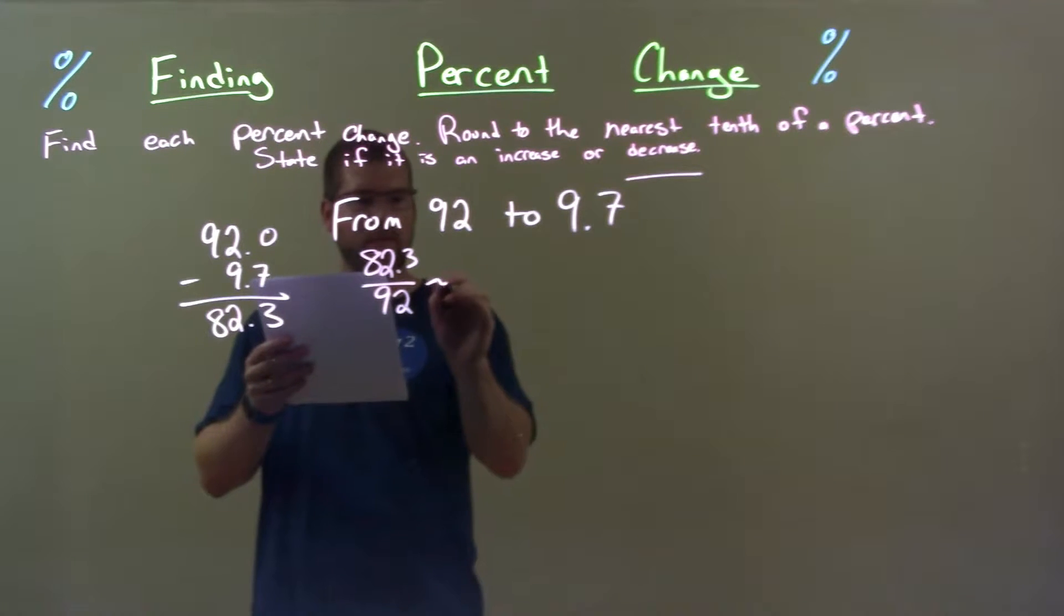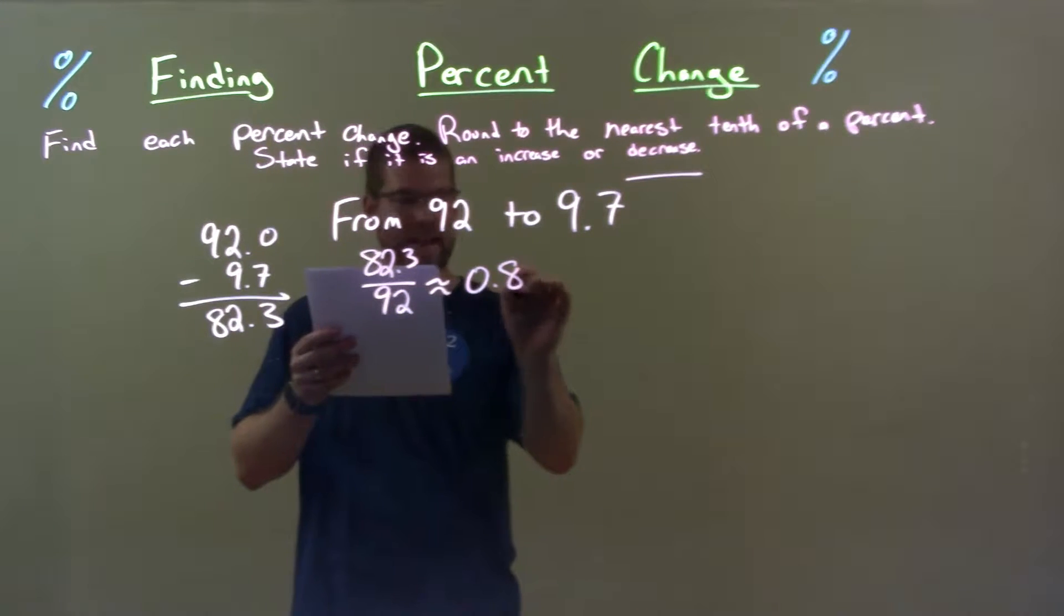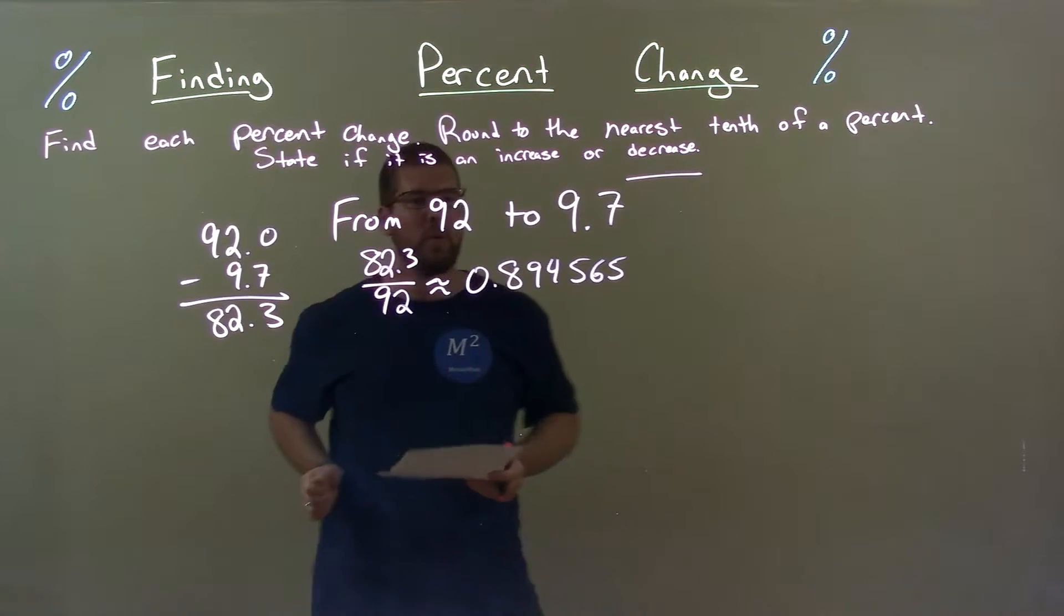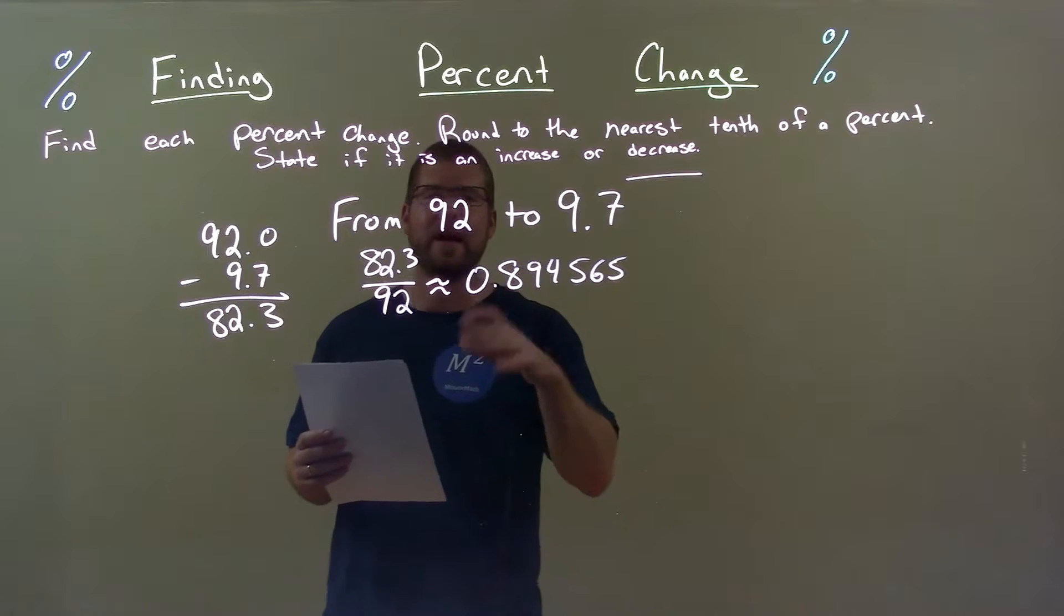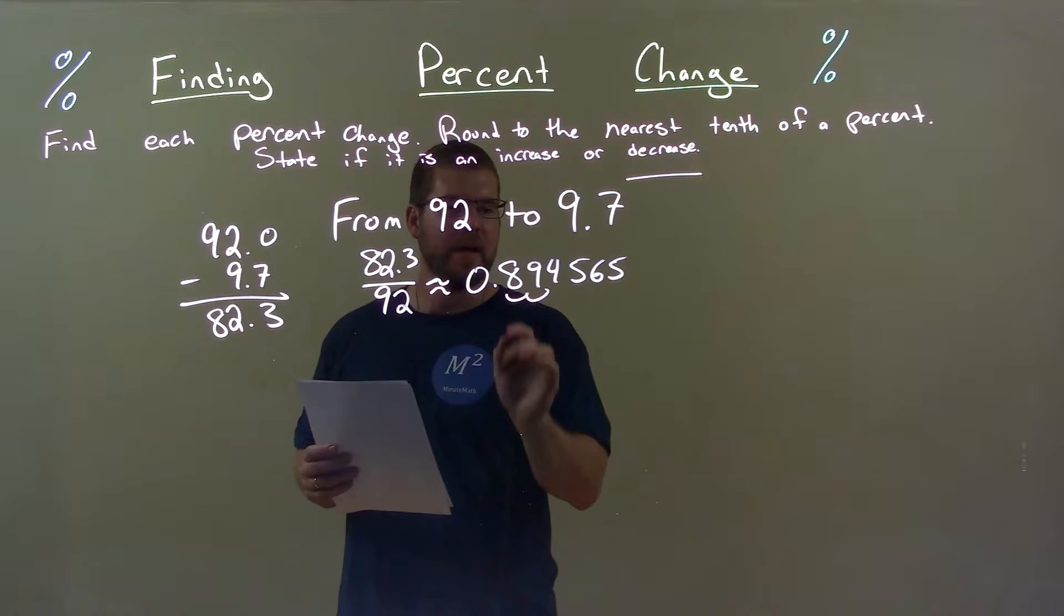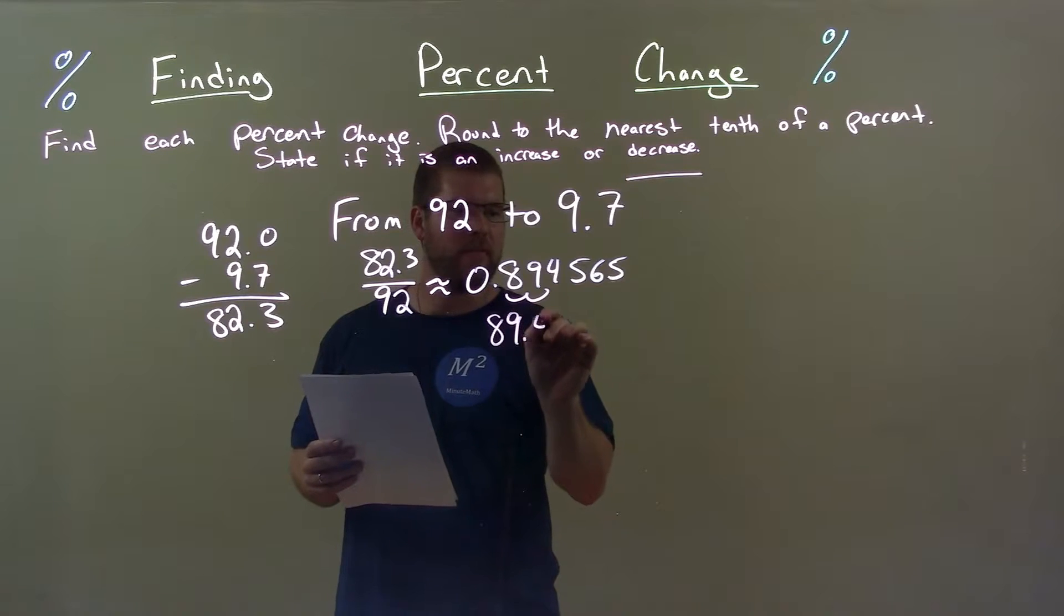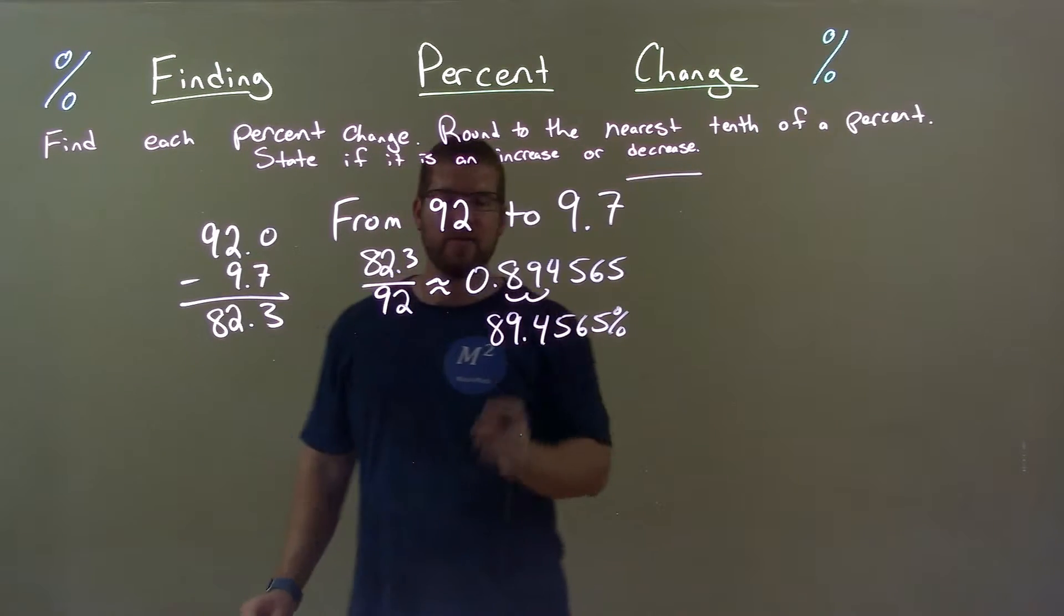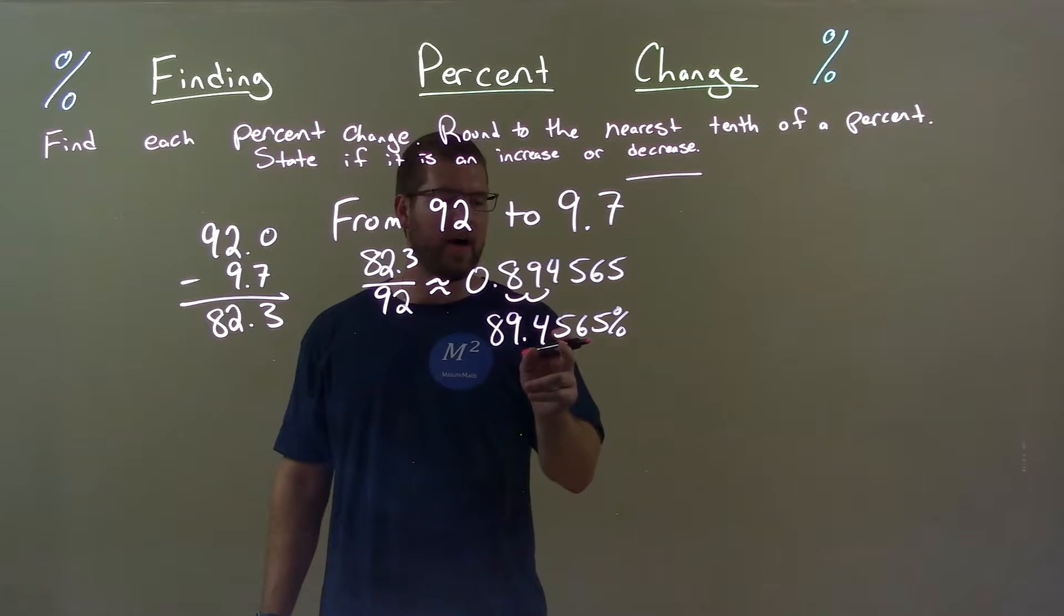This gives us an approximate answer of 0.894565. Now we got to convert this to a percent. Move two spots to the right: one, two. This gives us 89.4565 percent. Round to the nearest tenth. We look at the five. Five causes the four to go up one.